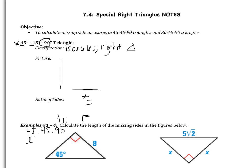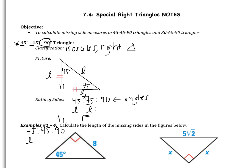Drawing a picture: we have one 90-degree angle, a 45-degree angle, and a 45-degree angle. Because we have two angles that are congruent, we're also going to have two sides that are congruent — the legs are congruent. Now for the ratio of the sides: the angles are 45, 45, and 90. The sides across from the 45-degree angles are both L, and the hypotenuse is L√2.